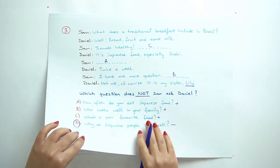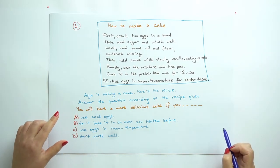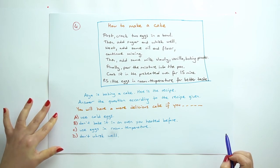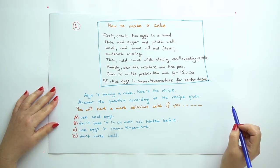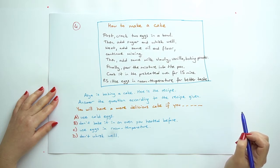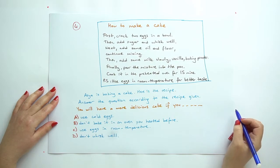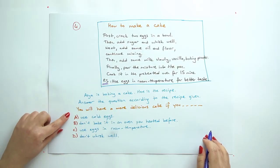Question 4: Ayşe is making a cake. Here is the recipe. Answer the question according to the recipe given. How to make a cake: first crack two eggs in a bowl. Then add sugar and whisk well. Next add some oil and flour and continue mixing. Then add some milk, vanilla, and baking powder slowly. Finally, pour the mixture into the pan. Cook it in the preheated oven for 15 minutes.